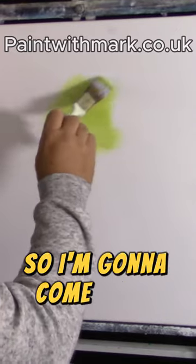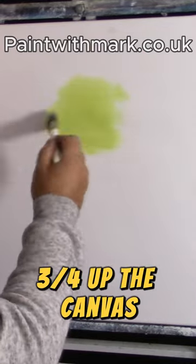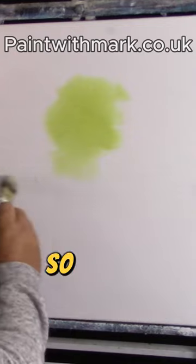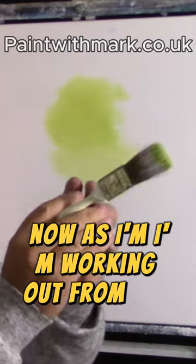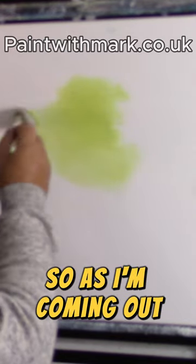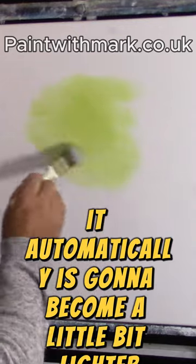I'm going to come up to about here which is about three quarters up the canvas and I'm just working out to about halfway down here. Now I'm working out from the middle outwards, so as I'm coming out it automatically is going to become a little bit lighter.